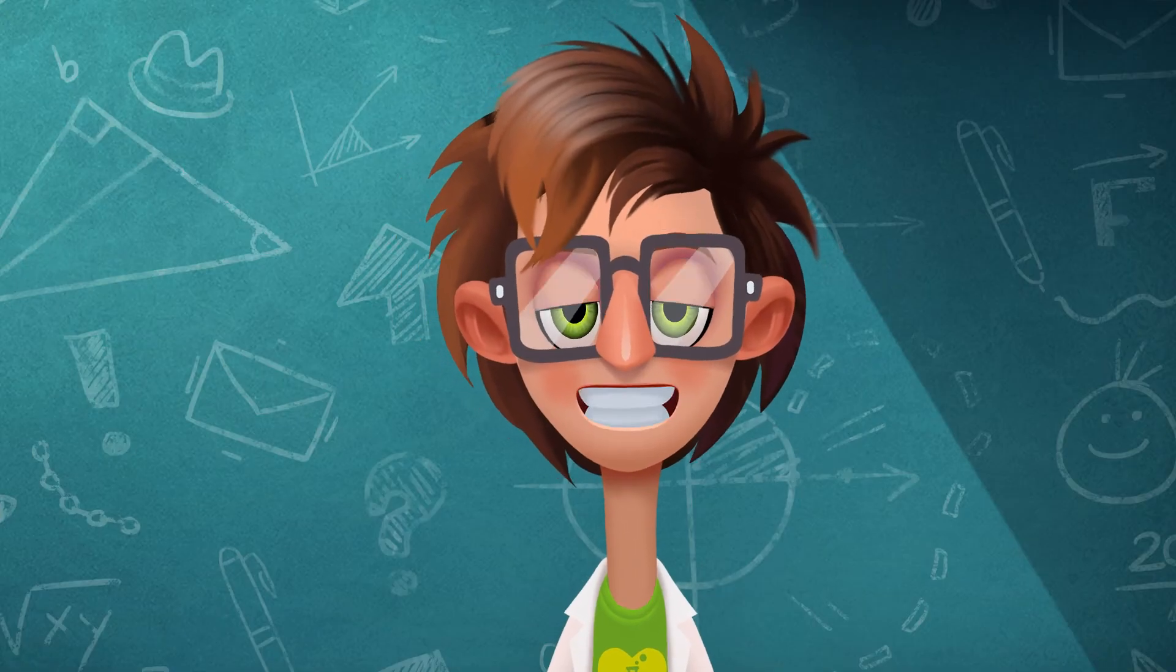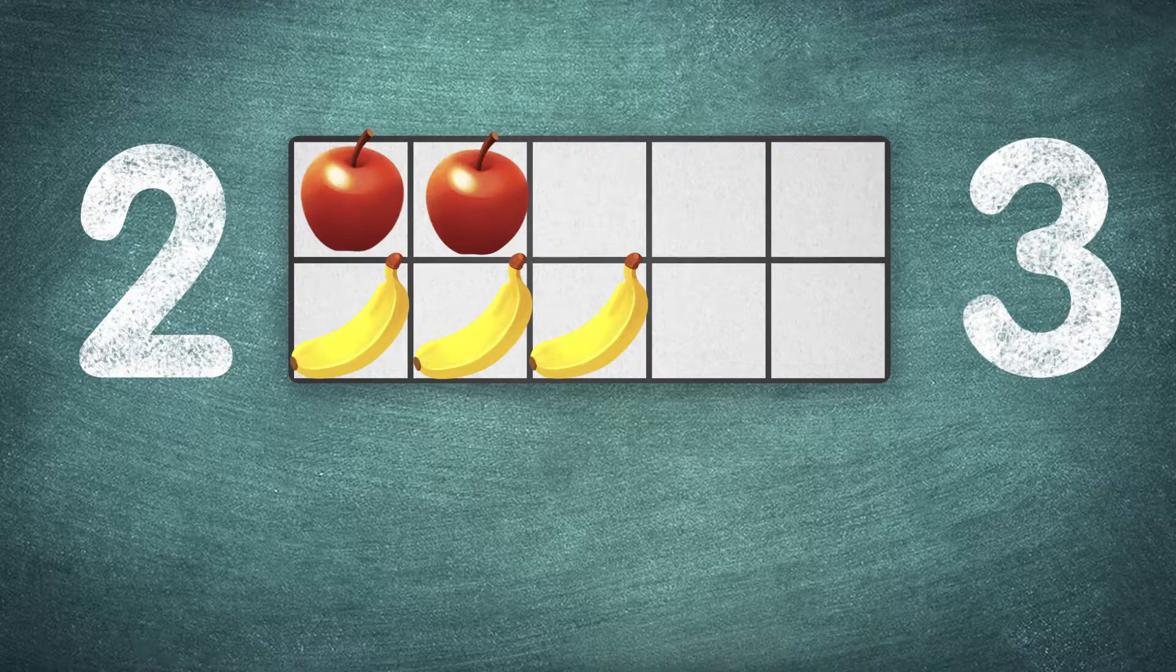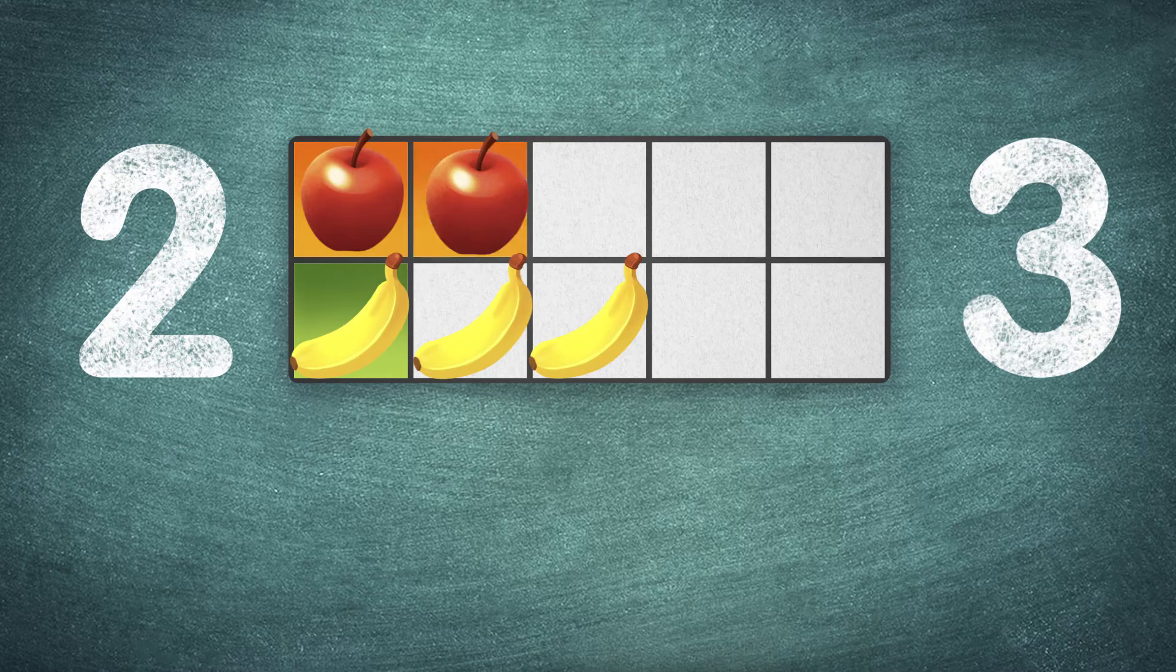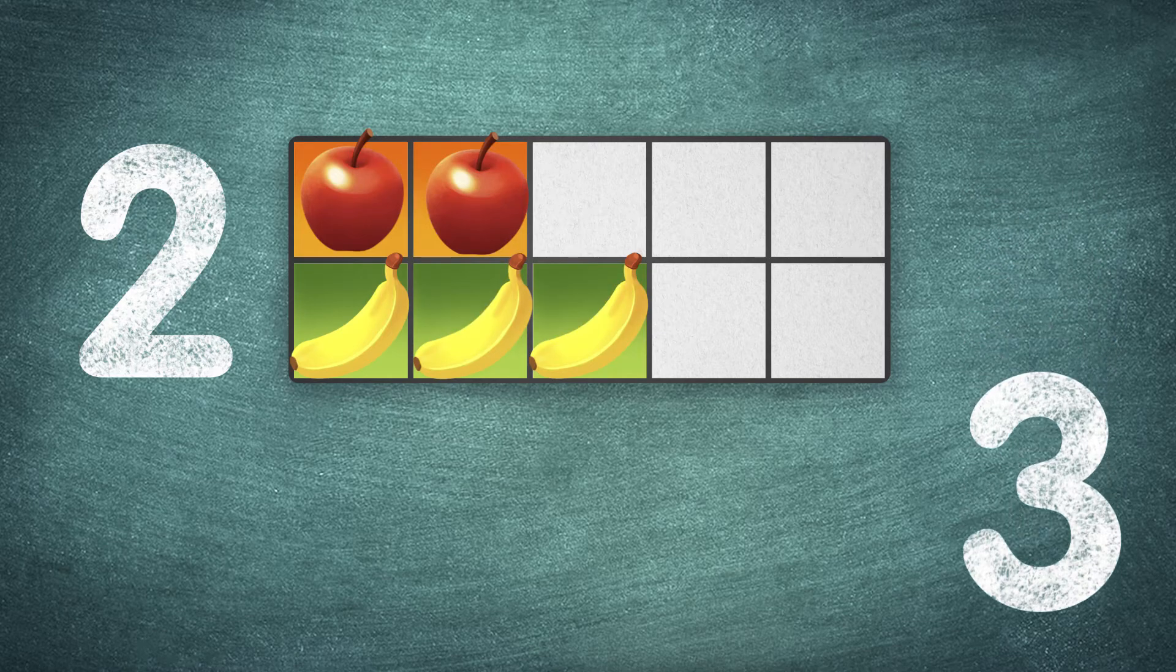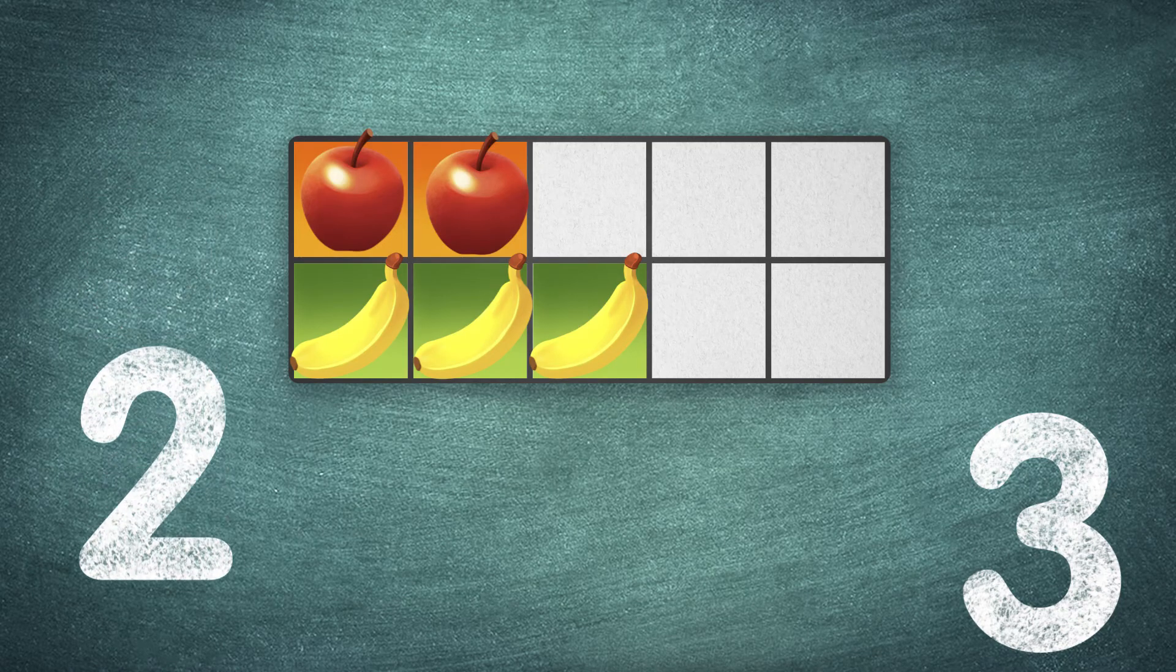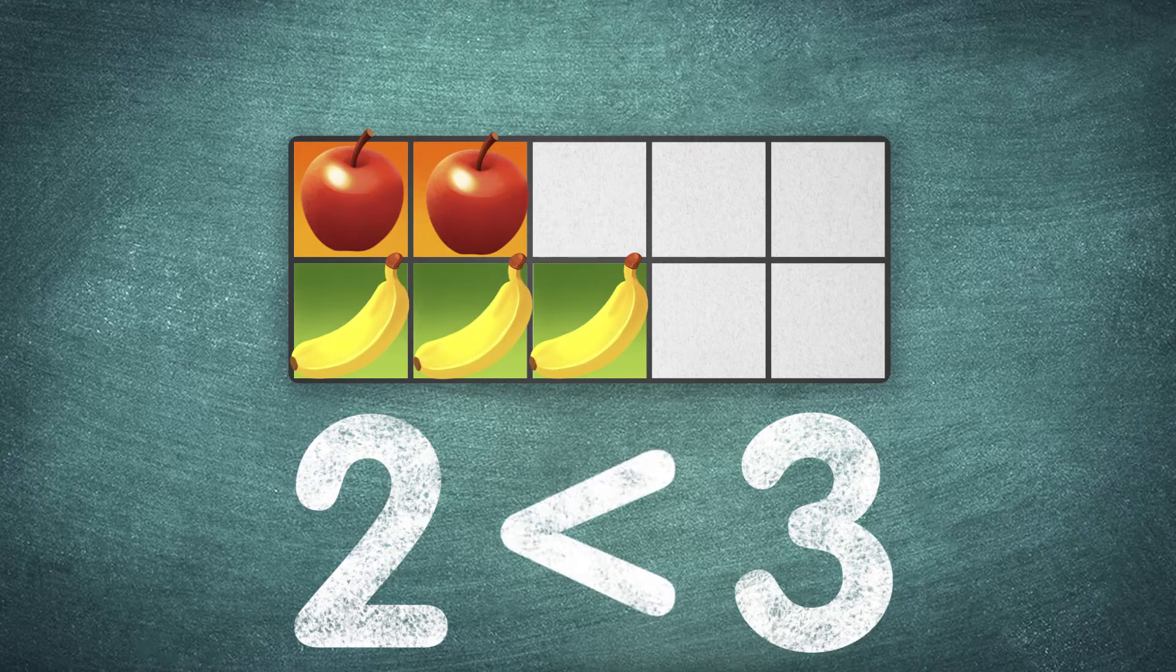Do we have more apples or bananas? Let's compare. How many apples are there? One apple, one banana. Two apples, two bananas. Three bananas. But there are no more apples. Two apples is fewer than three bananas. We can show that with the less than sign.